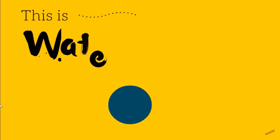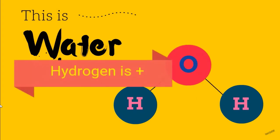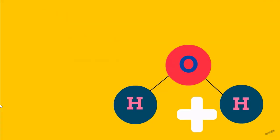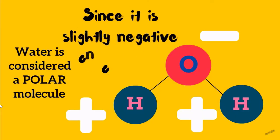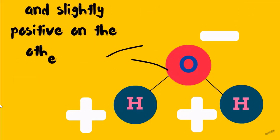This is the molecular structure of water. Hydrogen is positively charged and oxygen is negatively charged. Water is considered a polar molecule because it is slightly negative at one end and slightly positive at the other end.